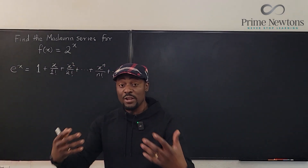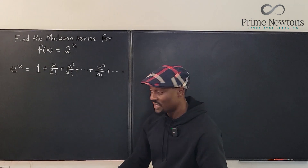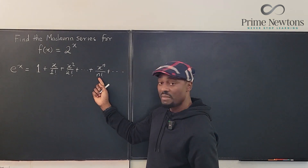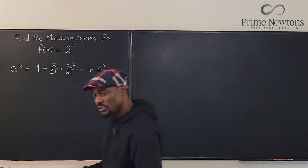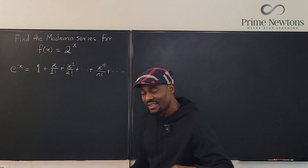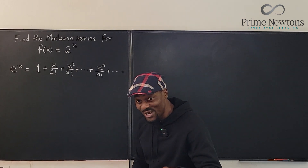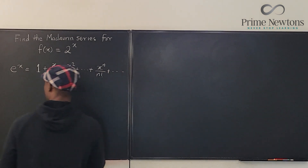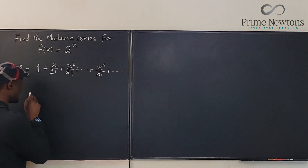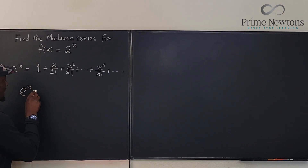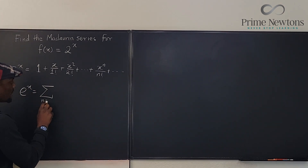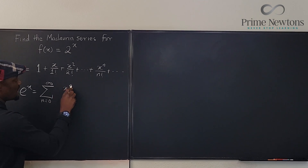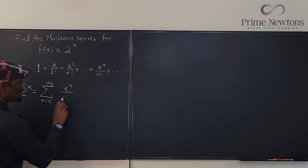So when you write a series like this, you're going to write the summation. I've seen people write that e to the x is basically the sum from n equals zero to infinity of x to the n over n factorial.